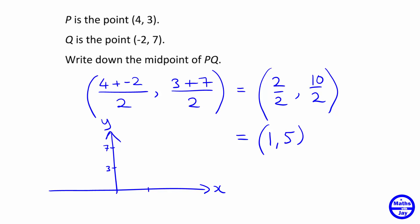We've got - well, 4 will be about here, and minus 2 about here. So where's P going to be? 4, 3. So P is about here. And Q is minus 2, 7. So that's up here. That's Q.